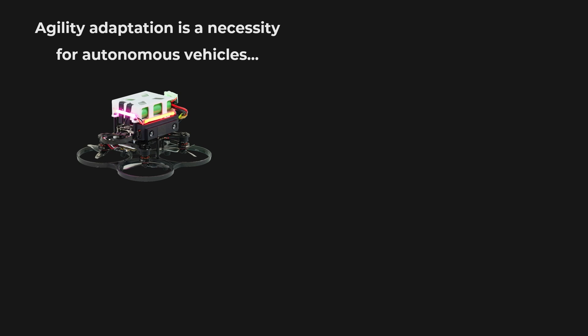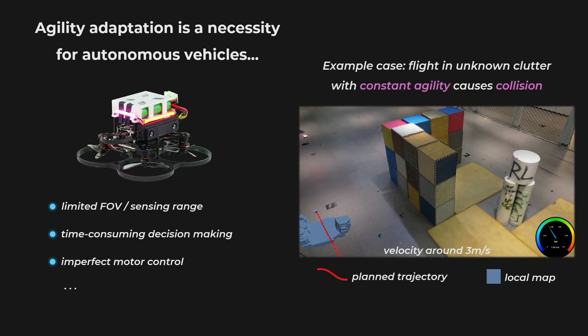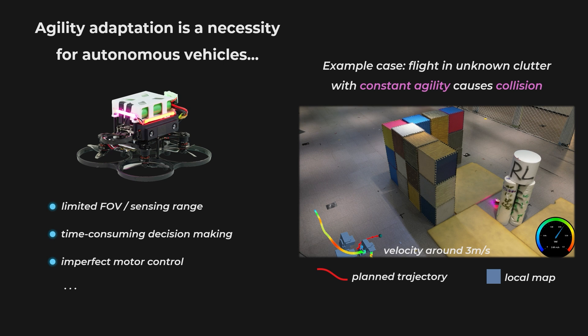The same goes for flight vehicles, which have restricted perception, decision speed, and state control capabilities. The maximum allowable agility to ensure safety varies in different environments and states of the vehicle. As in the example case, a vehicle traveling at near-uniform speed collides with an obstacle that suddenly appears behind a wall, resulting from factors such as occlusion and perception latency.